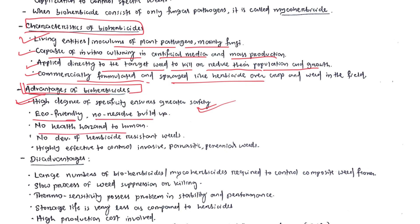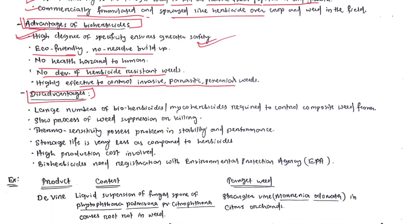Additional advantages of bio-herbicide: no development of herbicide-resistant weeds, and it is highly effective to control invasive, parasitic, or perennial weeds. Limitations: large numbers of different bio-herbicides are required to control a composite weed flora — since crop fields have mixed weed flora, we need multiple bio-herbicides, which is a tedious process.